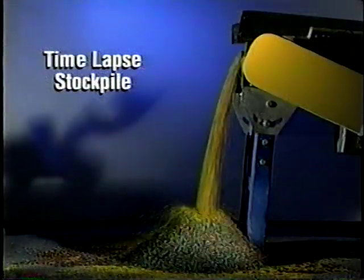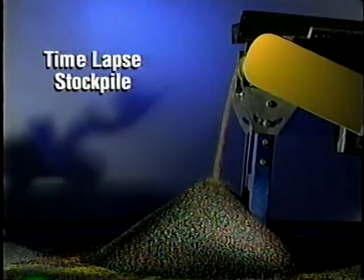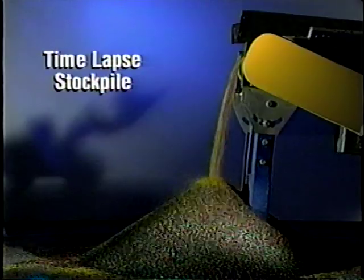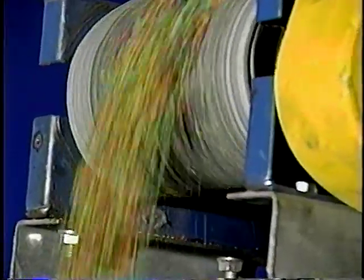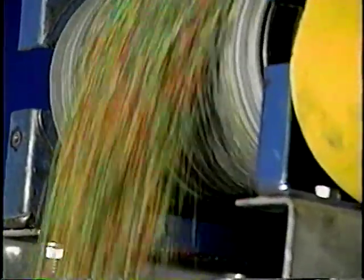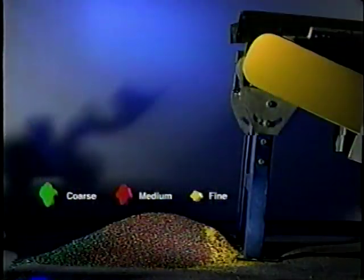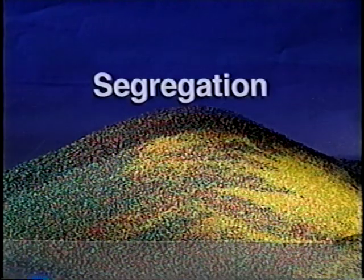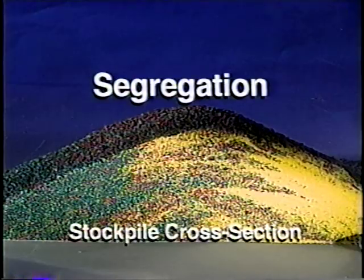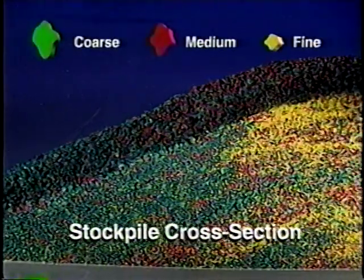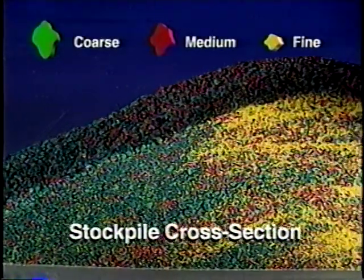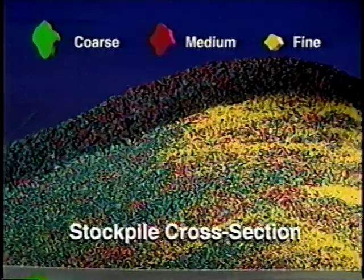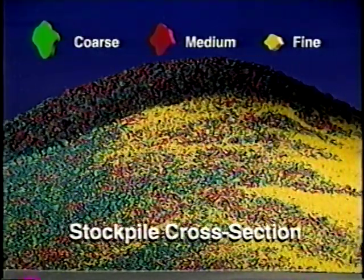This stockpile model clearly shows how material will segregate. As an aggregate stockpile is built, large particles tend to separate from smaller particles — it's simply a matter of gravity. We've come to know this process as segregation. And no matter how a stockpile is constructed, the possibility of segregation must be considered.